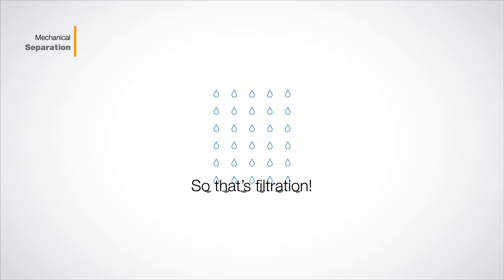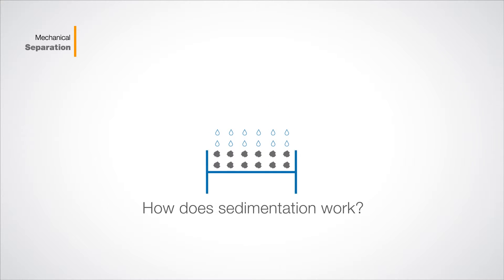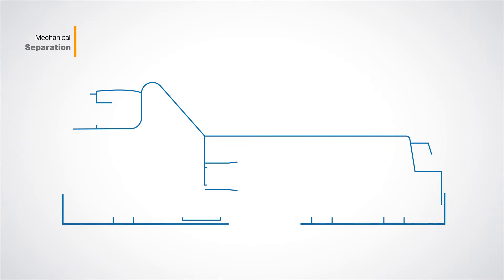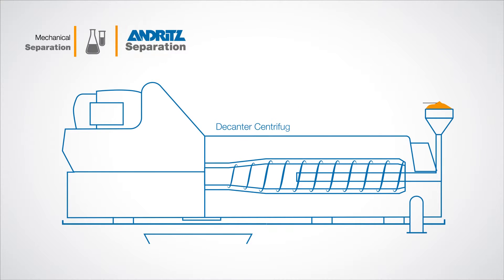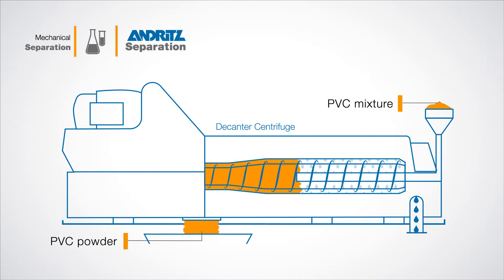So that's filtration. And how does sedimentation work? Let's take a look at PVC production where decanters are used to dehydrate the mixture and extract the PVC powder, one of the most produced synthetic plastics worldwide.